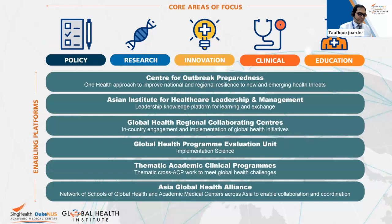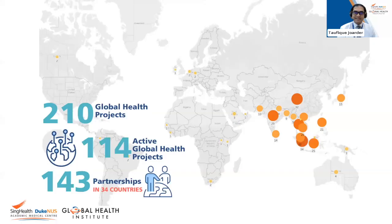I will serve as a bridge between the rest of the sessions and Professor Lucy Jilson's policy keynote speech. SingHealth Duke and U.S. Global Health Institute has five pillars, as John mentioned, and there are six enabling platforms, including outbreak preparedness, leadership and management, and implementation science. This map clearly shows that the concentration of most of our projects are in South Asia and Southeast Asia, largely the Asia Pacific region.